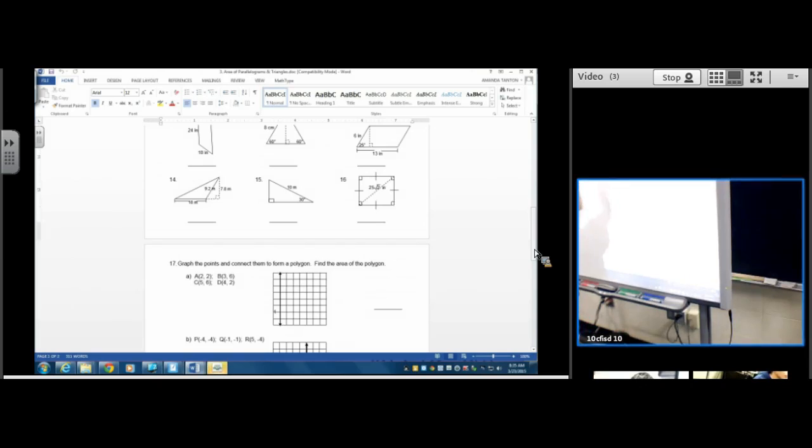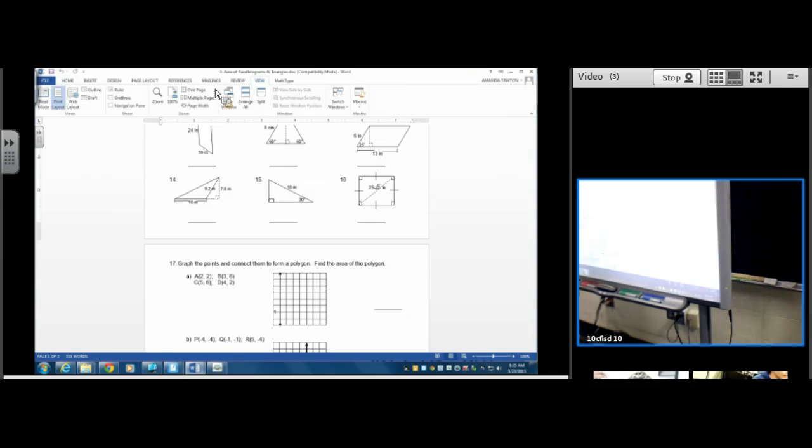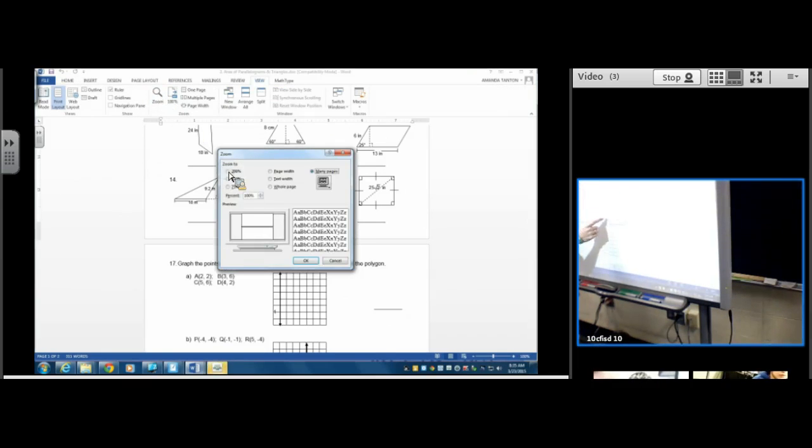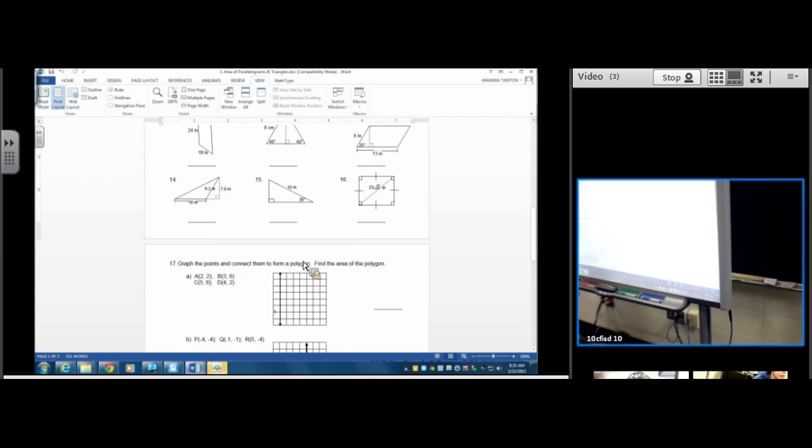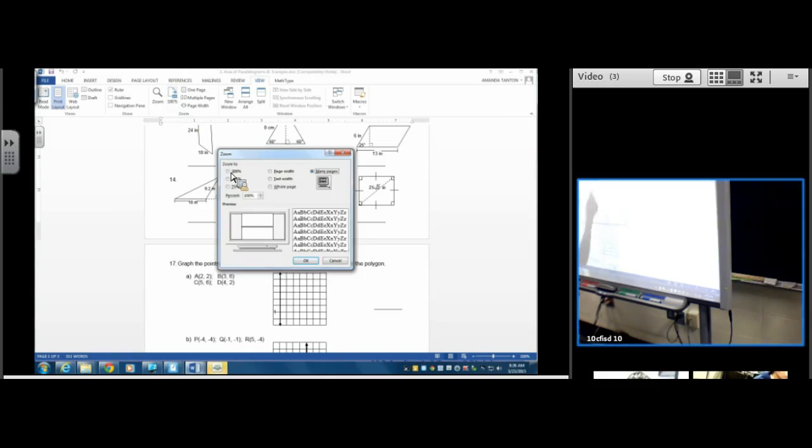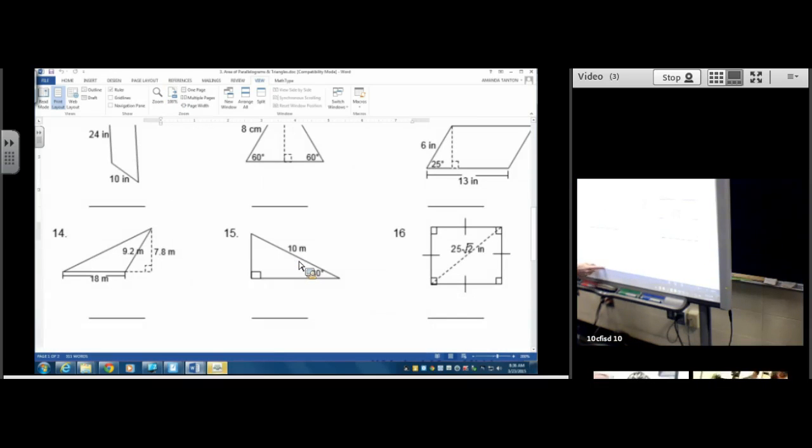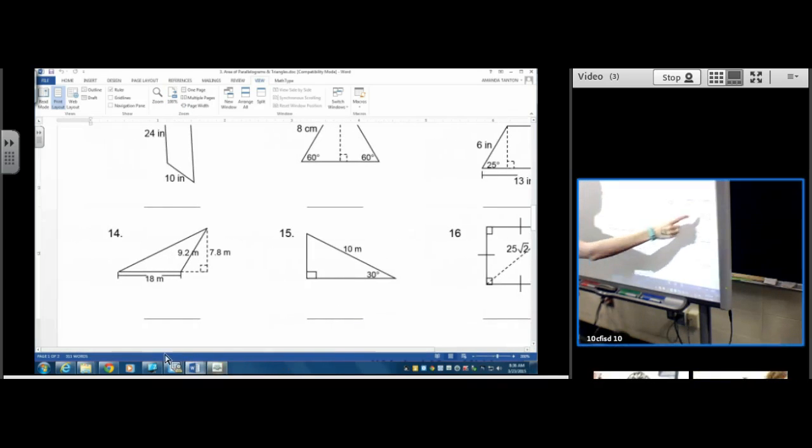So in number 14, we have an obtuse triangle. You see how this triangle is obtuse? Hopefully you have your worksheet in front of you since I can't get it to zoom in.